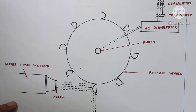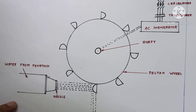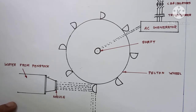The second category based on the action of water on the moving blade is the reaction turbine. Reaction turbines include the Kaplan turbine and the Francis turbine. Francis turbines are mainly used for medium heads, between 30 meters to 200 meters. Kaplan turbines are used for low heads, less than 30 meters.